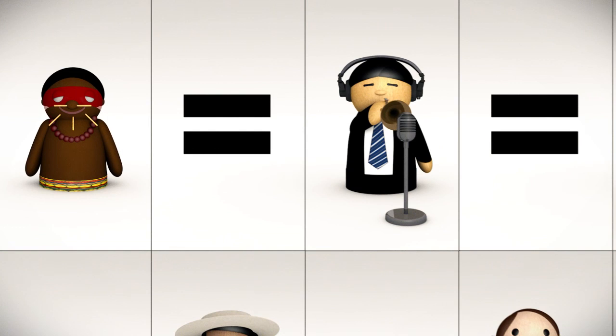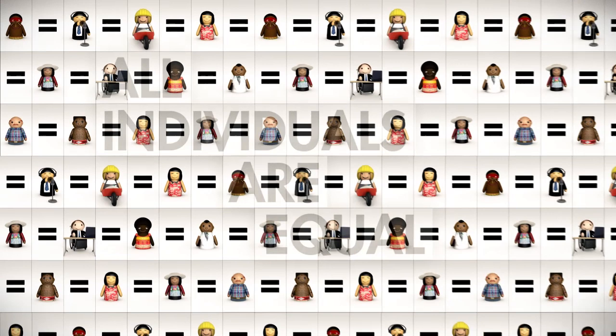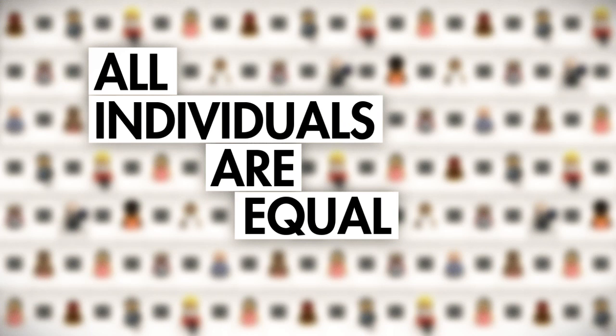The ban on discrimination forms a key part of all human rights. No one should be discriminated against on the grounds of their origin, religion, gender, sexual orientation, the color of their skin, age, or other differences.